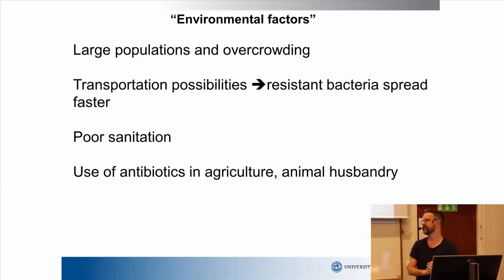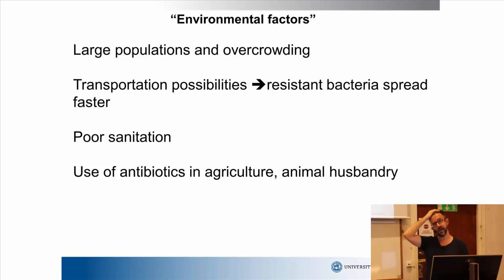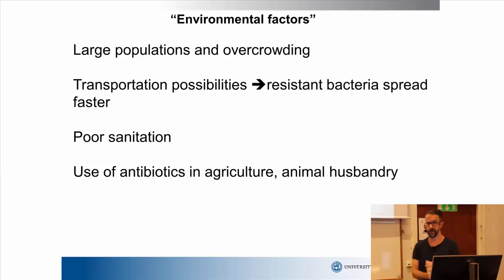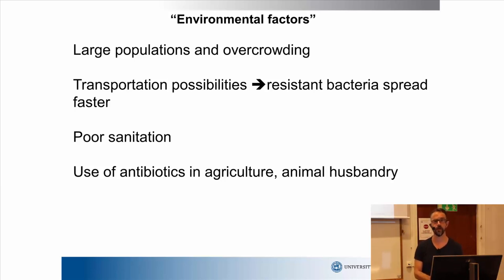I want to talk about four different areas — the main factors important for explaining behavior and the development of antibiotic resistance. The first set of factors I call environmental factors. The first one is large populations and overcrowding, because that tends to mean that people are sick more often and diseases spread more quickly, which means we use more drugs than otherwise.